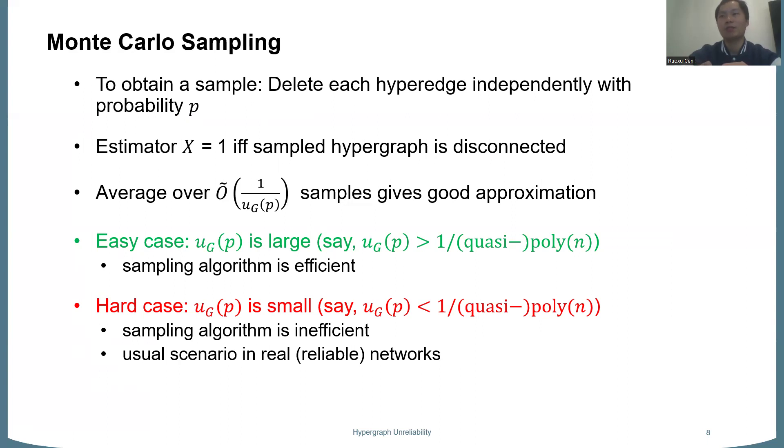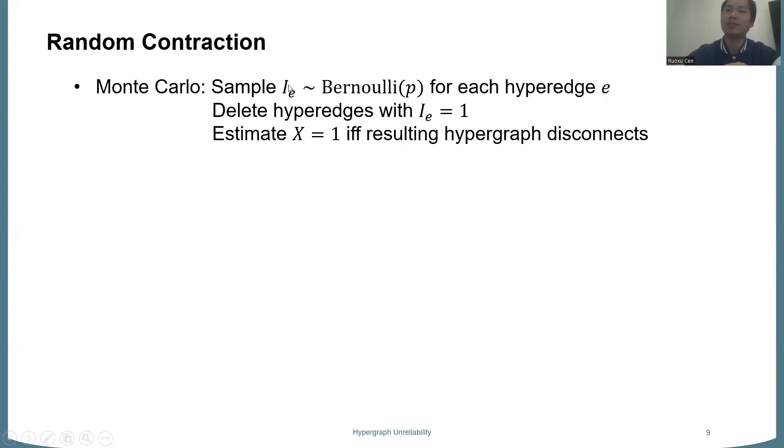And the remaining case is when u is very small, less than one-over-quasi-polynomial. In this case, the Monte Carlo sampling is inefficient and we need something more. This might seem to be a border case, but it's also a usual scenario in real networks because they are typically designed to be very reliable, but we still want to evaluate how reliable they are.